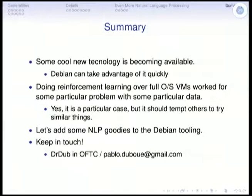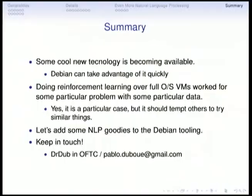To conclude: some cool new technology is becoming available, and in Debian we can take advantage of it if it's useful for us. When I saw this talk I was really impressed about the fact that they could make this virtual machine stuff work. If you want to take something out of this talk, it's that this type of technology actually works for somebody. I hope we can add some natural language processing goodies to the Debian tooling. Let's keep in touch — I'm at debian-dc and pablo.dubois at gmail. Thank you.